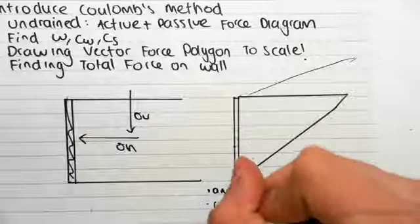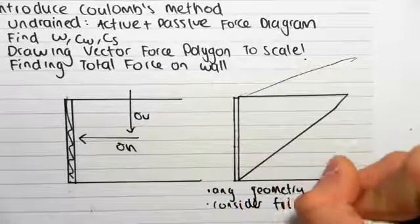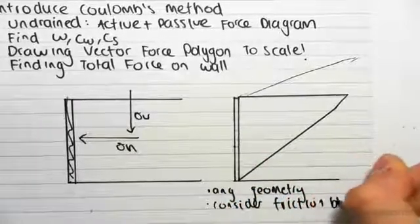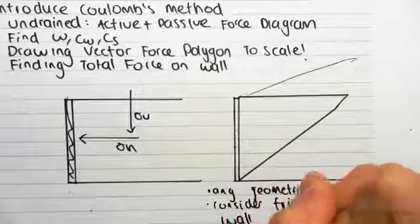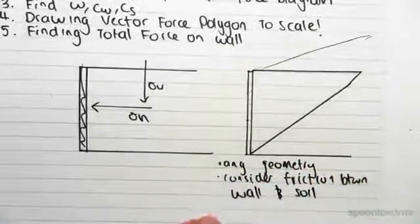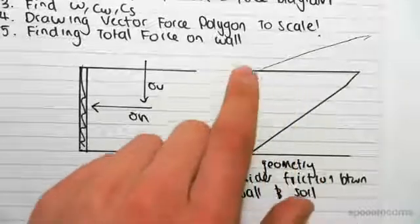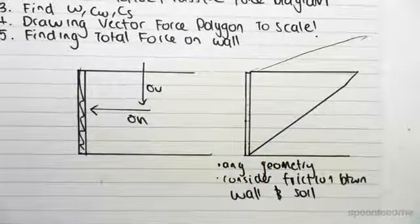We can also consider friction between wall and soil, which we couldn't do in Rankine's method. So we can consider friction along the wall and soil interface, which we'd develop.